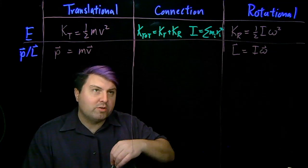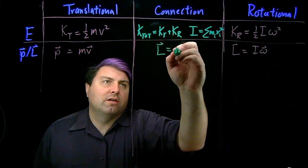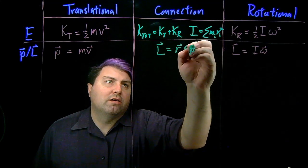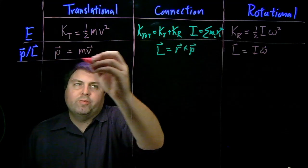And our connection between these two is how we find L. L is r cross p. So we've got that for momentum.